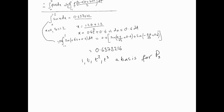The functions 1, t, t², t³ form a basis for P₃ — the space of all cubic polynomials. A basis means vectors that are linearly independent and span the entire space. Any cubic polynomial can be represented by these four ingredients. Since integration is a linear process, getting the rule exact for these four basis functions means it's exact for any cubic polynomial.